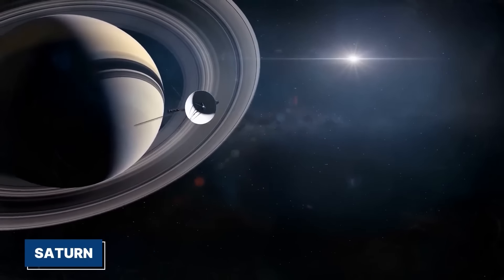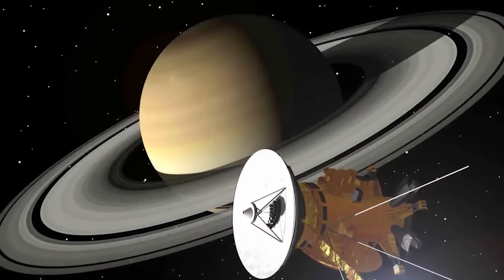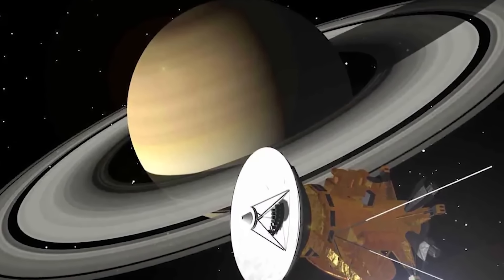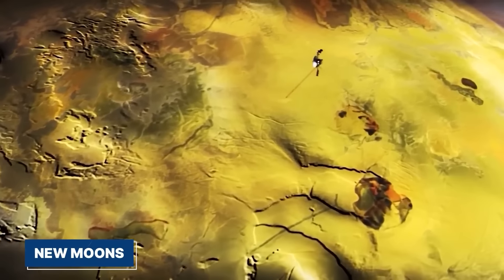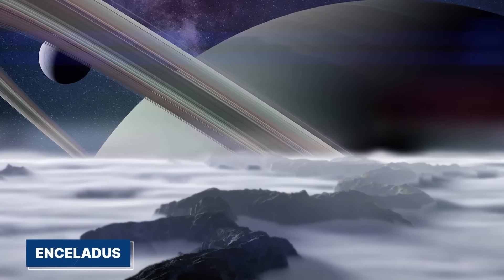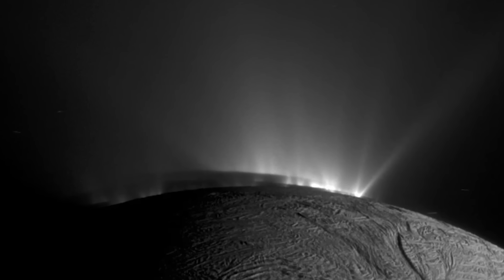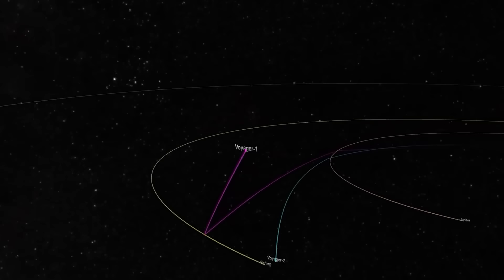The Voyagers' encounter with Saturn was equally dramatic. As the spacecraft approached the ringed planet, they discovered several new moons, including Enceladus, a small icy world that is now believed to harbor a vast underground ocean.